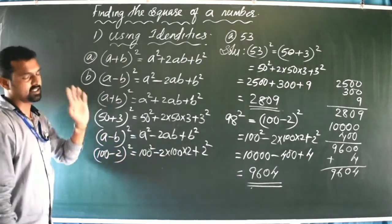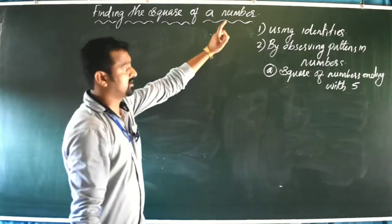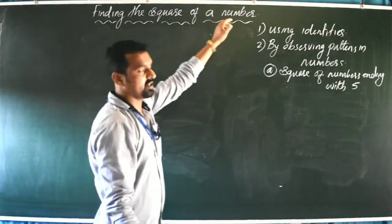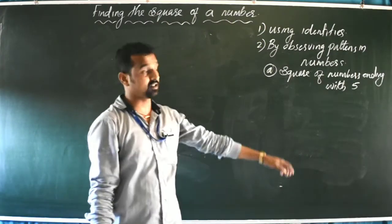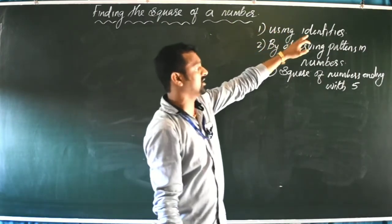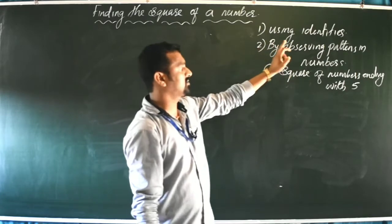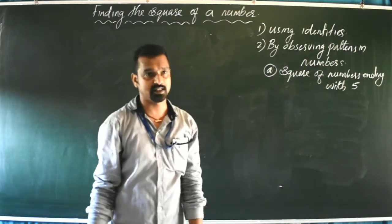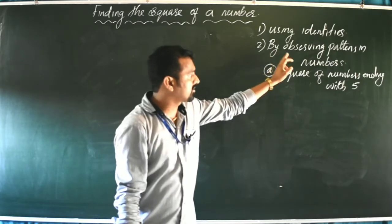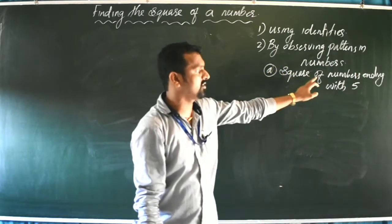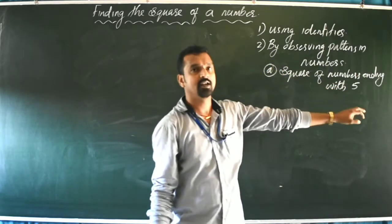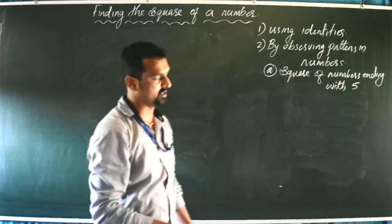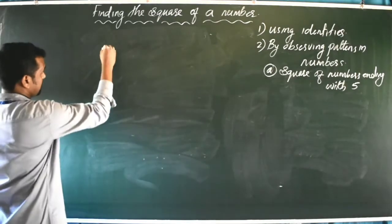The second method is by observing patterns in numbers. In this method, the first pattern is the square of a number ending with 5. If a number ends with 5, we can find its square very easily.